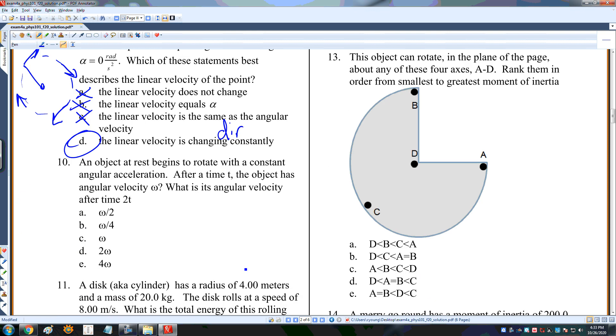An object begins at rest with a constant angular acceleration. After time t, the object has angular velocity omega. What is it after time 2t? Omega equals alpha t, assuming omega nought is zero, which it is. If I double t, that means I double omega. So D is the right answer.